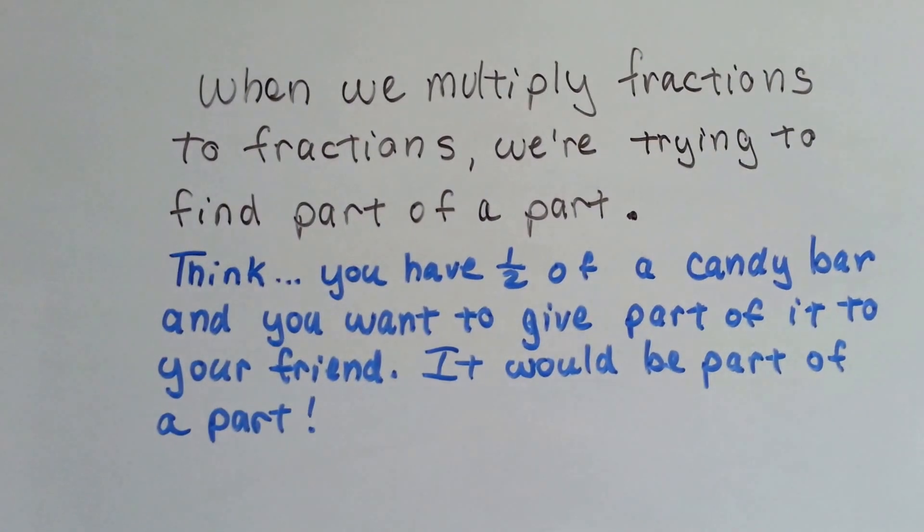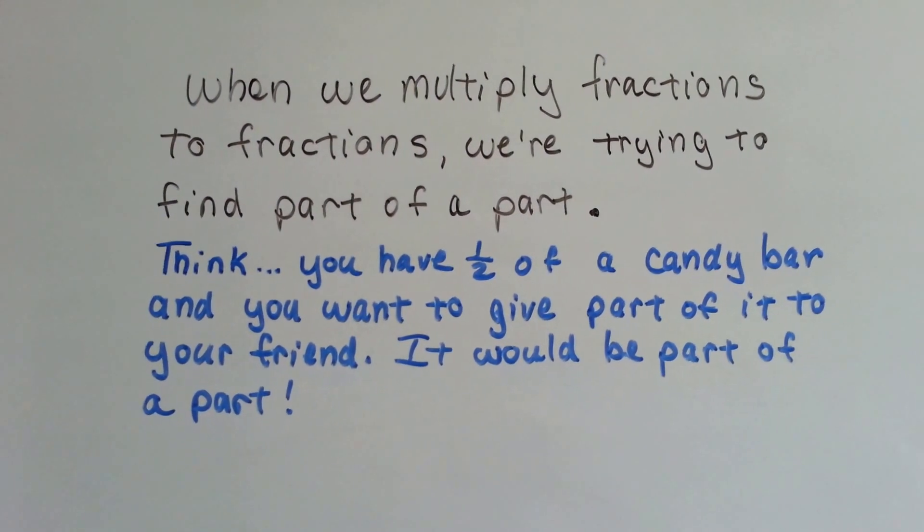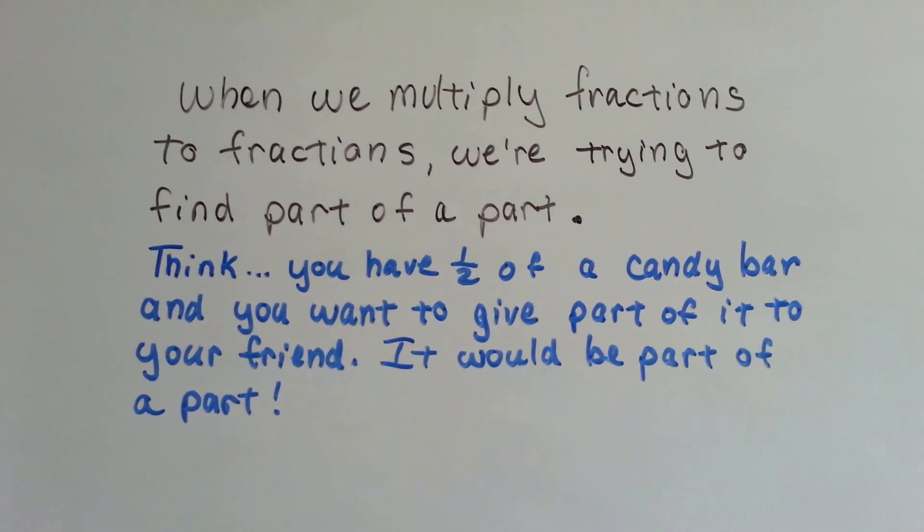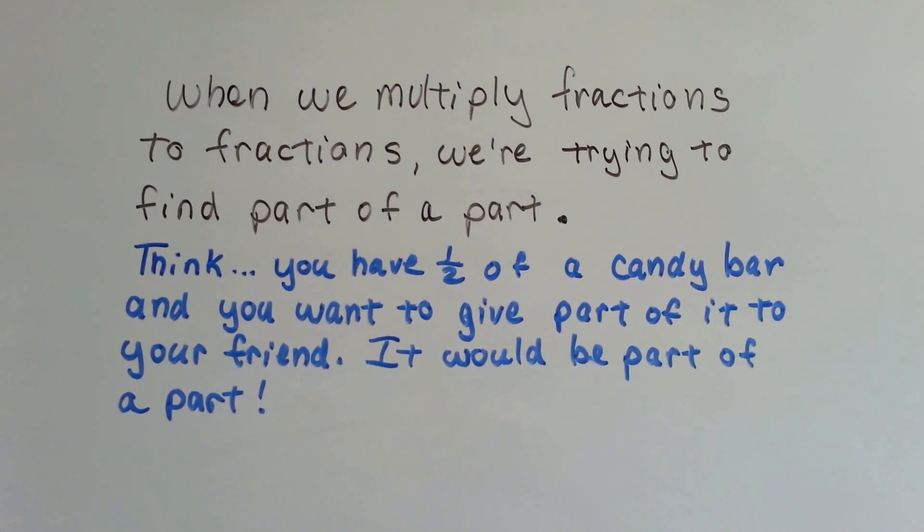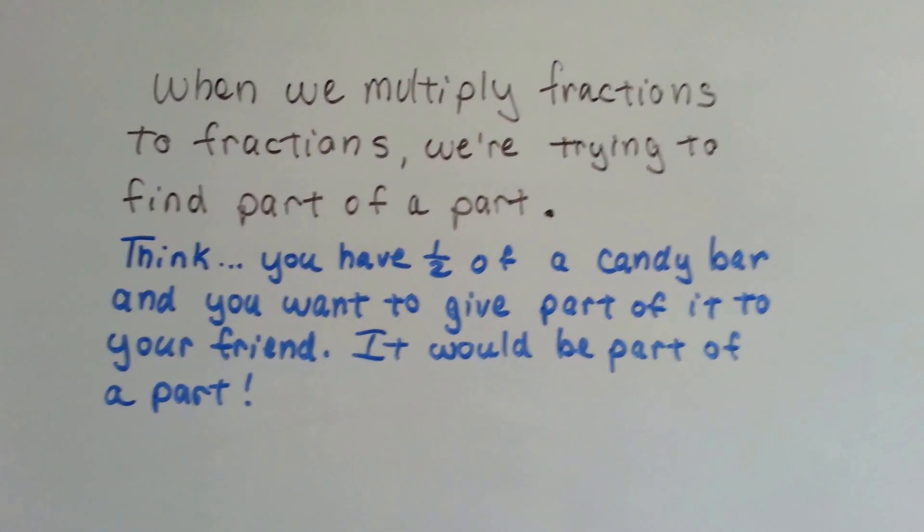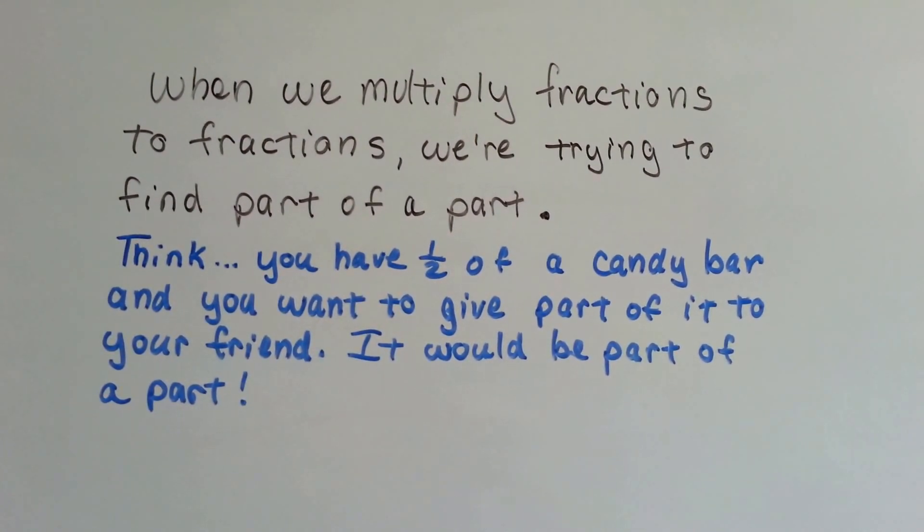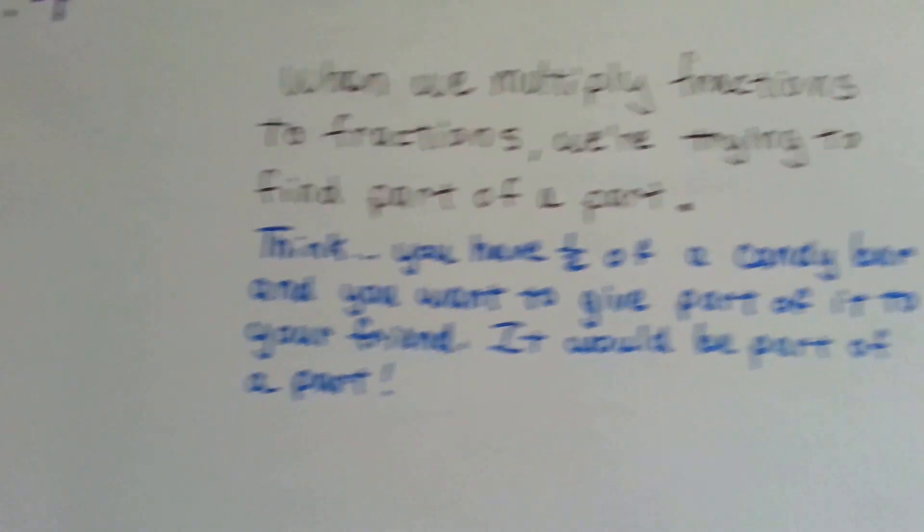When we multiply fractions to fractions, we're trying to find a part of a part. If you think you have half of a candy bar and you want to give a part of it to your friend, you've only got a half, and you're giving a part of that fraction to your friend. So that would be a part of a part.